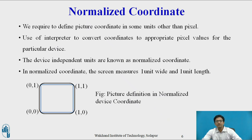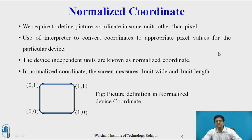We define picture coordinates in some unit other than pixels and also use an interpreter to convert coordinates to appropriate pixel values for a particular device. These device-independent units are known as normalized coordinates. In normalized coordinates, the screen measures one unit wide and one unit in length.